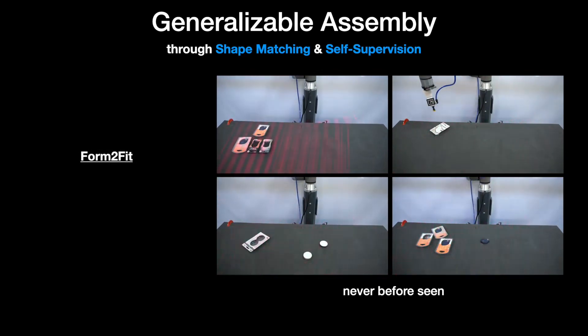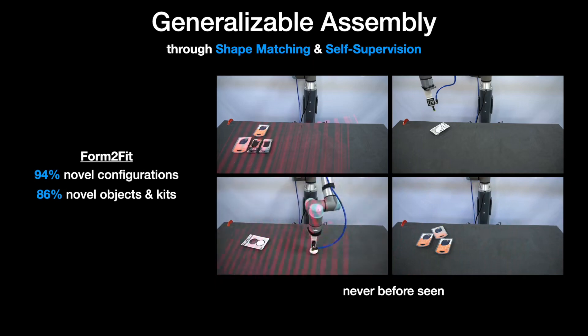We call our resulting real-world system Form2Fit, and it learns effective pick-and-place strategies that achieve over 94% average assembly accuracy on novel kit configurations, and 86% success on completely new objects and kits in just 12 hours of training.